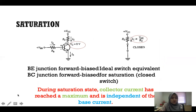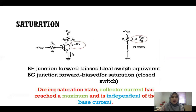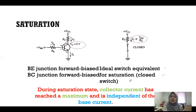As a summary: when the BE junction is forward biased, you have an ideal switch equivalent; but if the BC junction is also forward biased, it is a closed switch. During the saturation state, the collector current has reached a maximum and is independent of the base current.